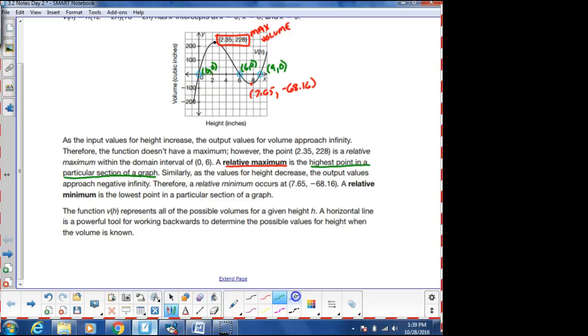Likewise with minimums. A relative minimum is the lowest point in a particular section of graph. My parents in Florida live at an elevation of negative 16 feet. So they're 16 feet below sea level at their house in Florida.